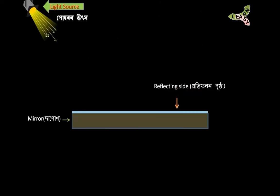To understand the reflection of light, we have to have some components. First, a light source. Then we will use a mirror. The blue colored side is the reflecting side, and the black or grey colored side is the non-reflecting side.